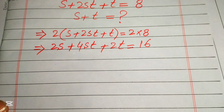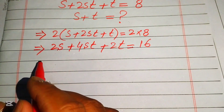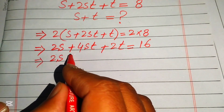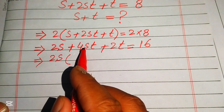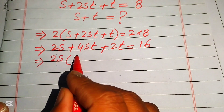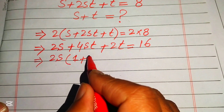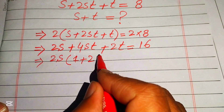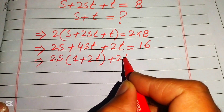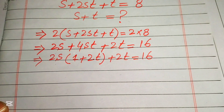From the first two terms, 2s is the common factor. Taking 2s common, we get 2s(s plus 2t) plus 2t equals 16.